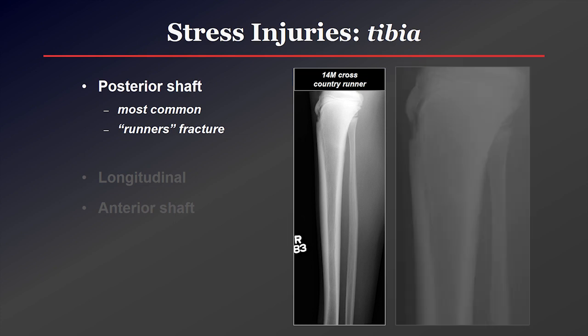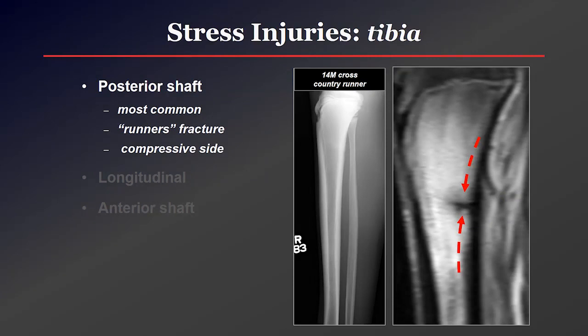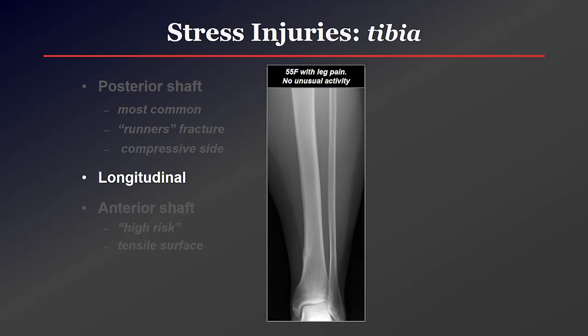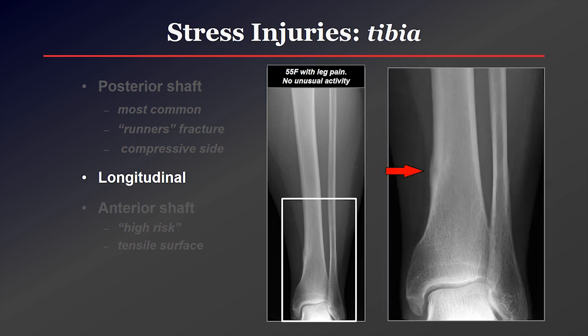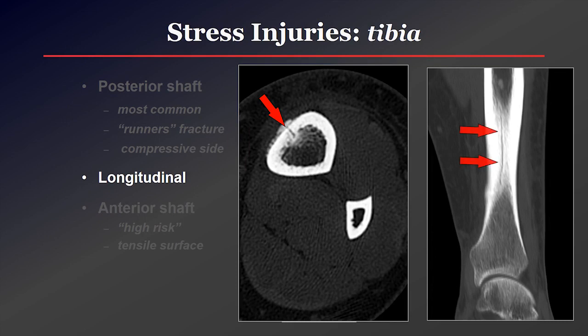Looking at the tibia, the posterior shaft is the most common area for a stress injury, known as a runner's fracture. Much like the femoral neck, these do pretty well because that's on the compressive side — the posterior tibia has a concave margin, and these go under compression with weight bearing. Longitudinal fractures are much less common but do occur. Here's a 55-year-old without a significant activity history where we see periosteal reaction and cortical lucency suspicious for a stress injury. She underwent a CT, and you can see the fracture line in the anterior tibia shown to be a vertical longitudinal stress fracture.